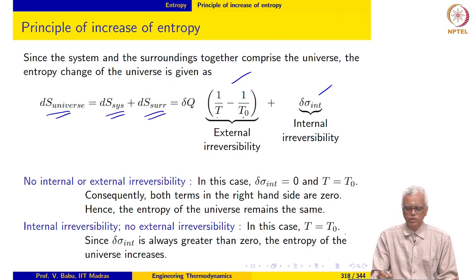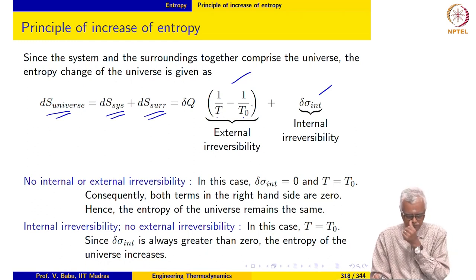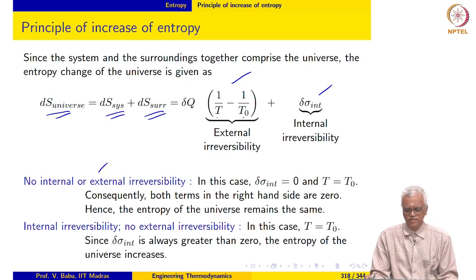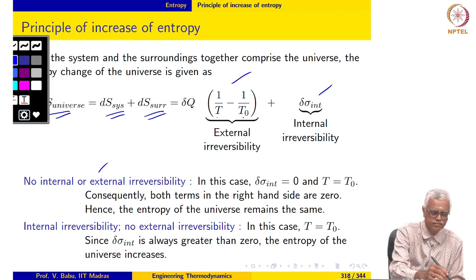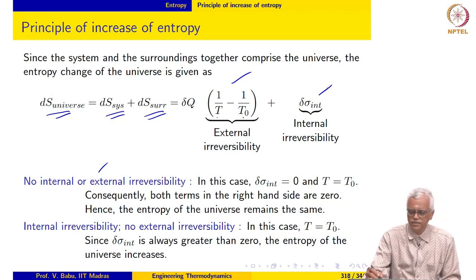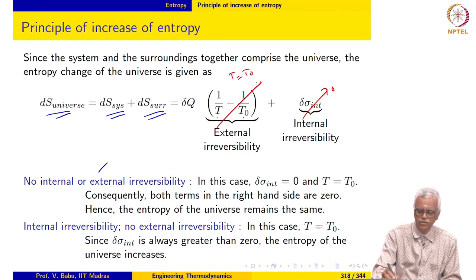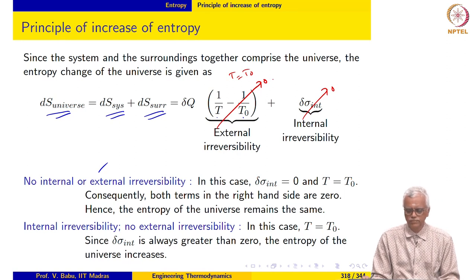Now let us look at the various possibilities we may encounter. The first possibility is the simplest: no internal or external irreversibility. In this case, delta sigma int is set to zero and T equals T naught, so there is no external irreversibility either. Both right-hand side terms are zero, so the entropy of the universe remains the same.